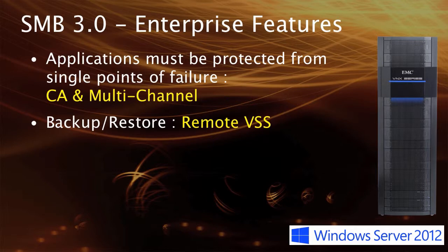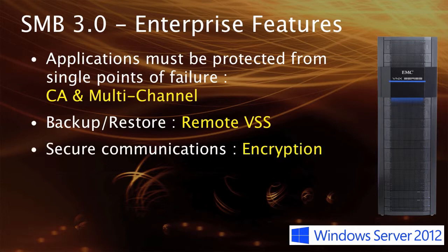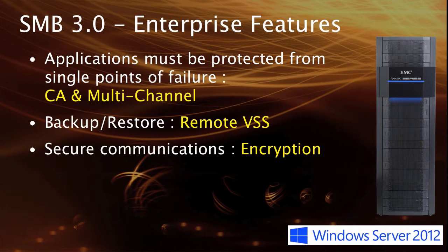As you deploy these applications and the data is persisted on a remote file share, there has to be some way to do backup and restore. For SMB 3.0 environments, there's support for remote VSS capabilities, so a requester application can interact with it and do backup and restore operations against the SMB 3.0 share itself. Obviously we're using a network protocol — Ethernet networks are relatively easy to snoop on — and if you're running business applications, some of that material you may not want others to see. So there is now encryption built into the SMB 3.0 protocol.